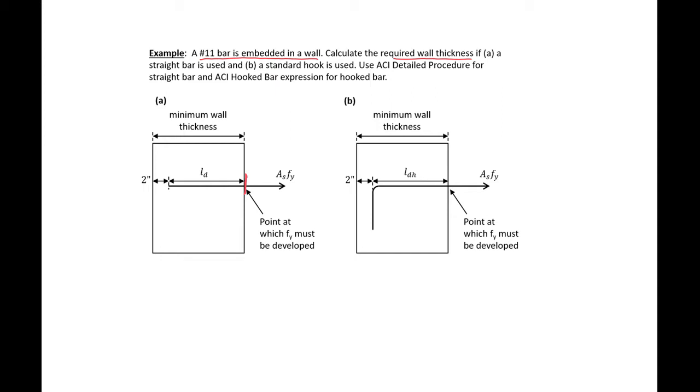So we're going to look at both a straight bar using the ACI detailed procedure and a standard hook using once again the ACI procedure. We can see that we will have two inches of cover on the back side of the bar and two inches of cover on the back side of the hook.